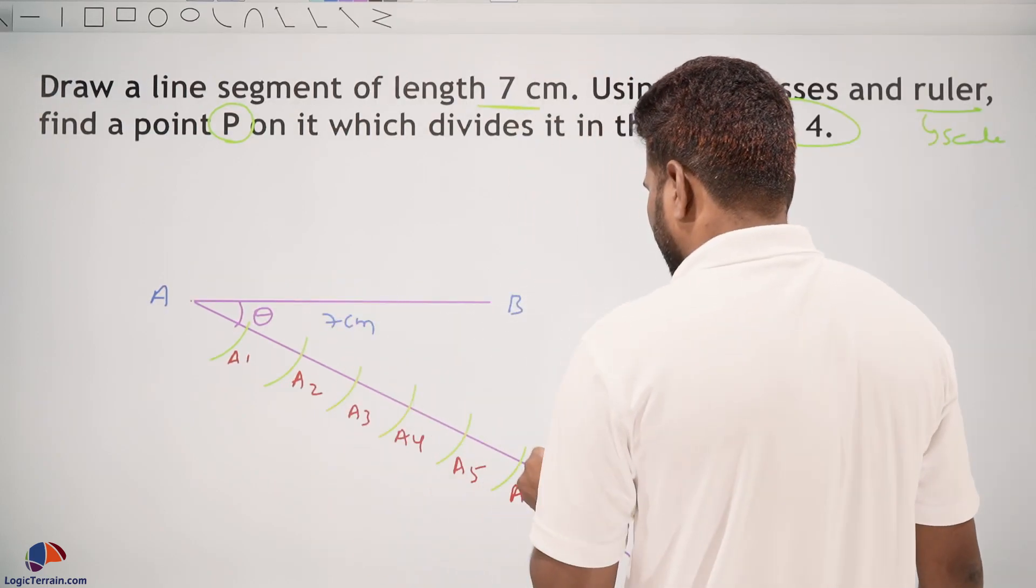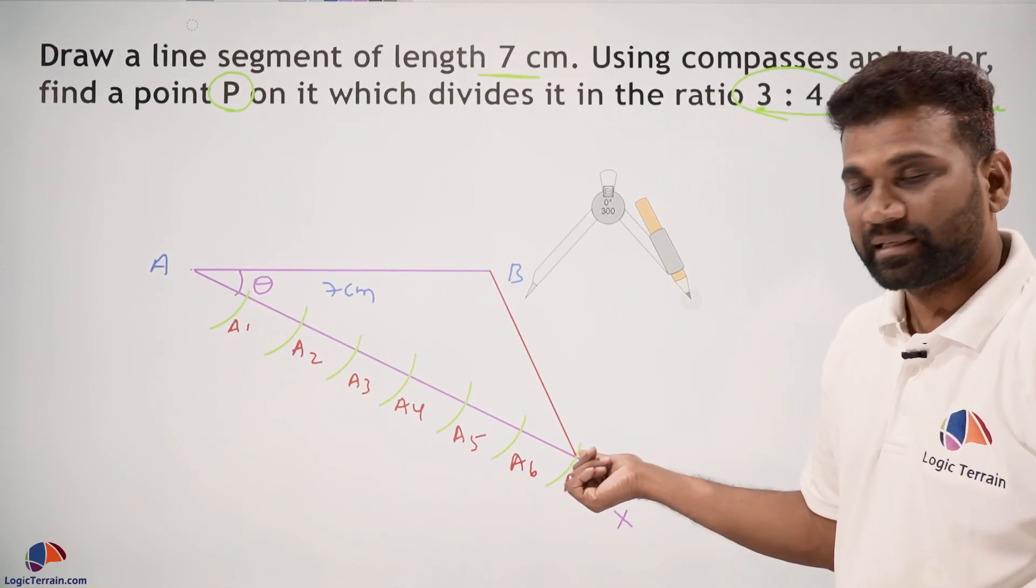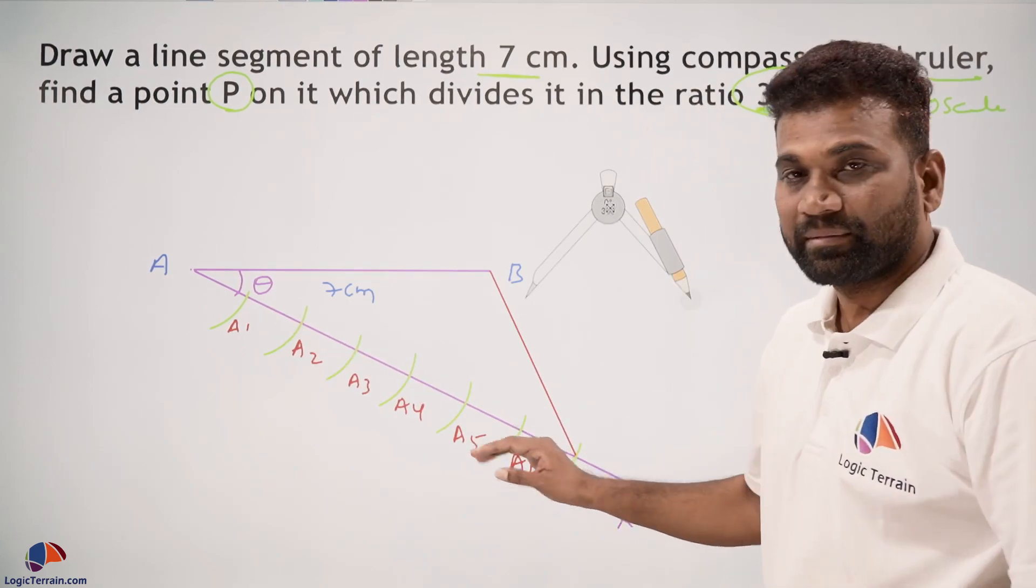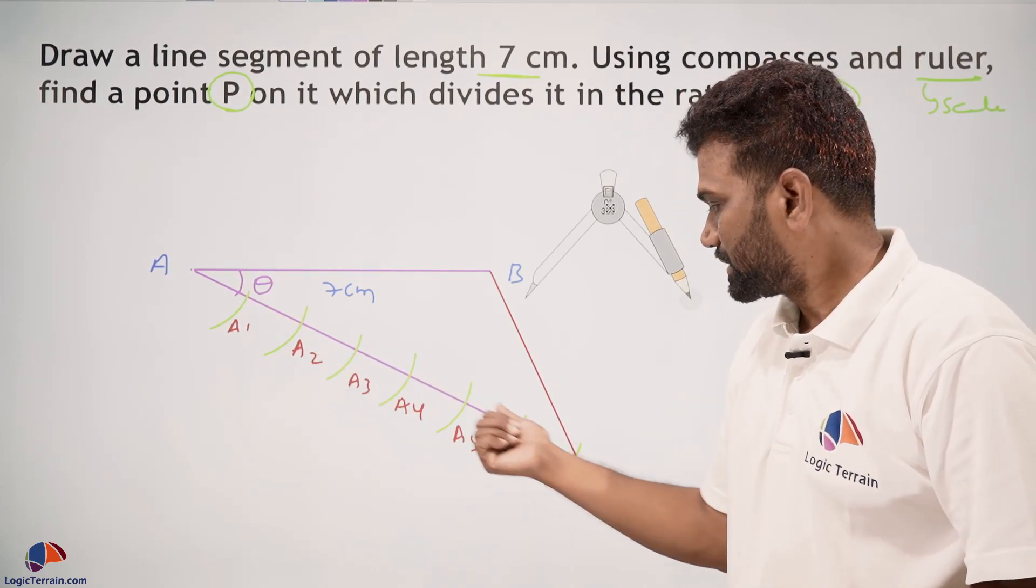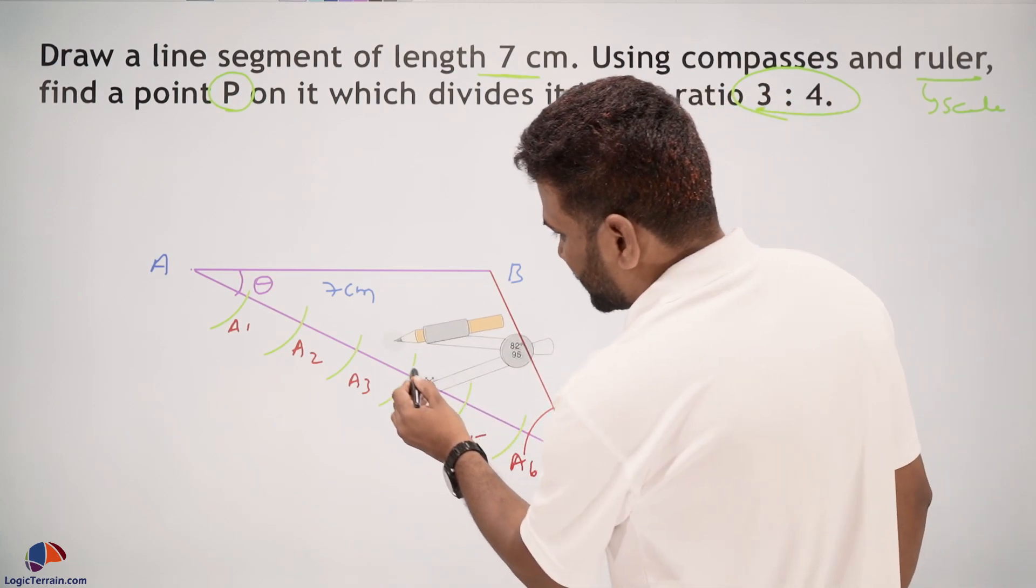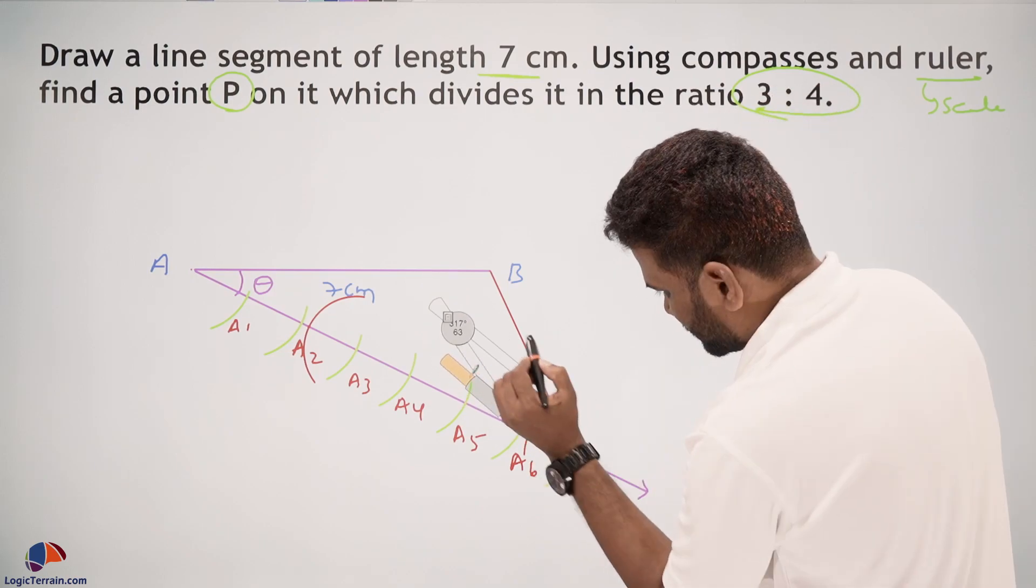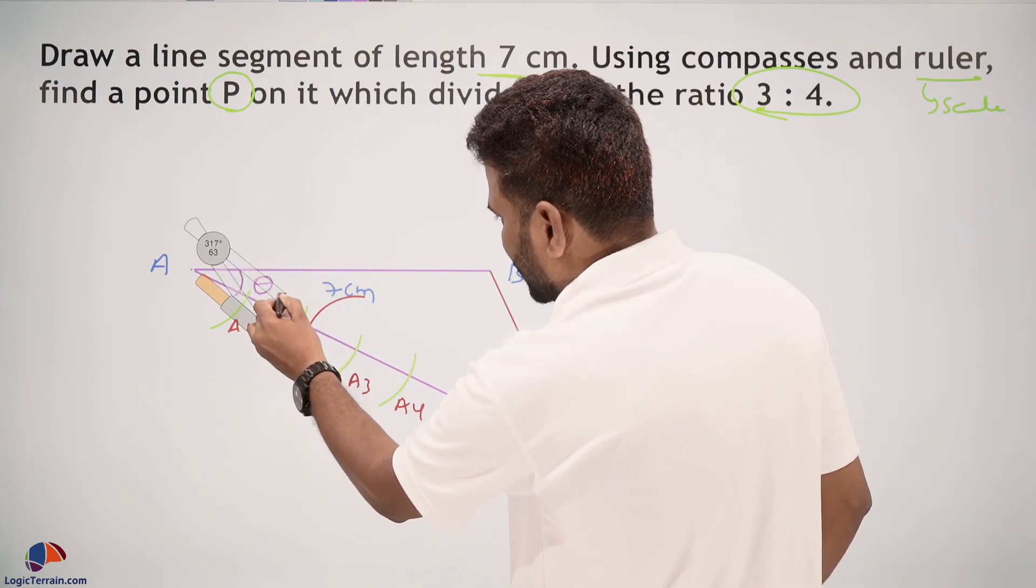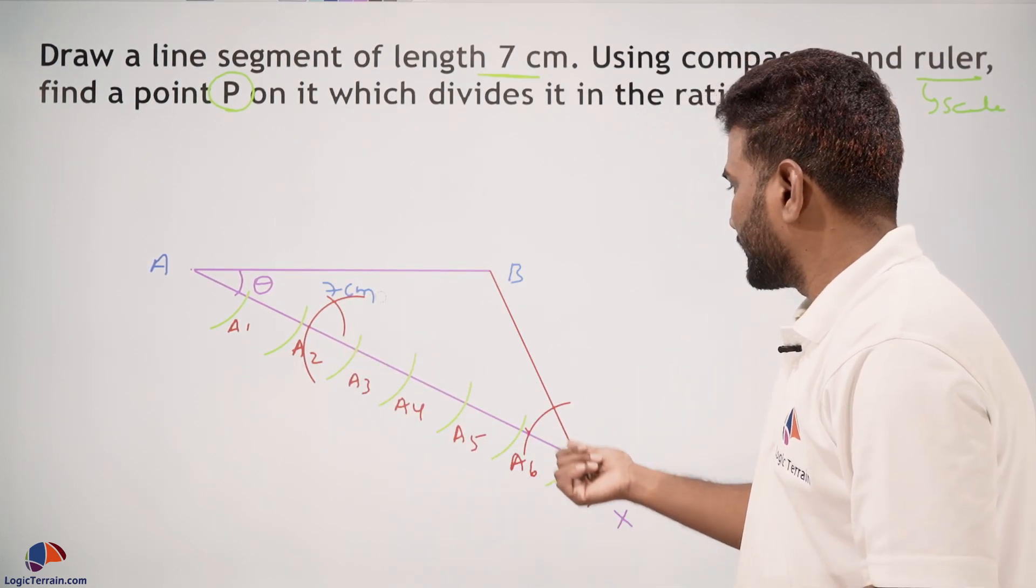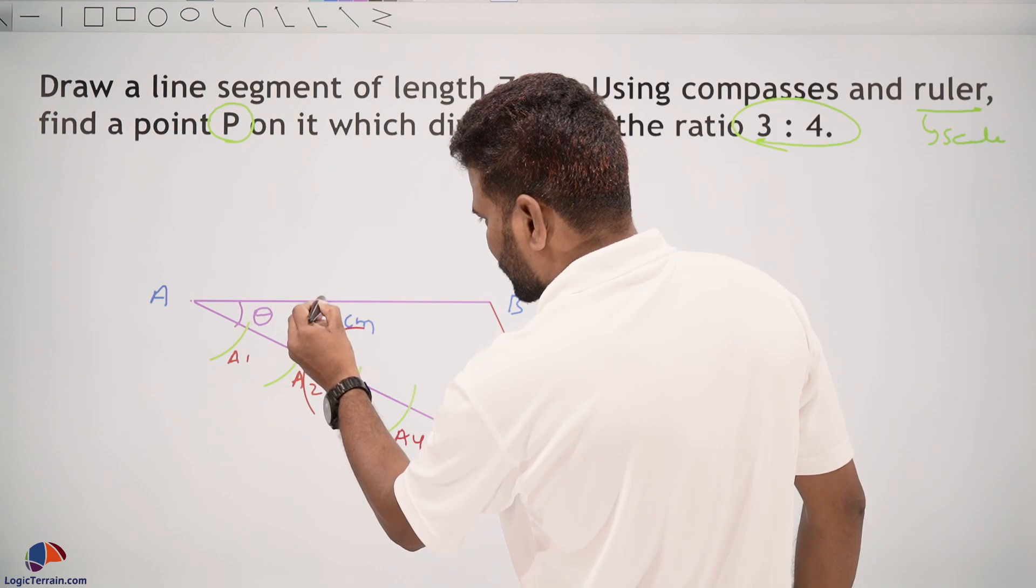I'm joining B and A7. Measure a small angle at A7, and the same angle will be made at A3, since AX is the same ray and A7 and A3 are on this same line. Measure some length, and with the same length from A3, make an arc. Here we got one point. Now join A3 and this point on AB.